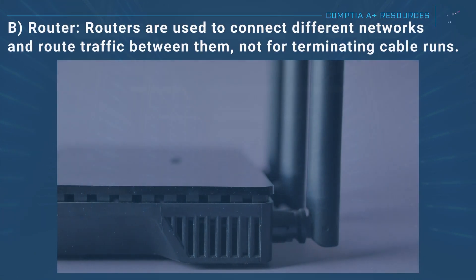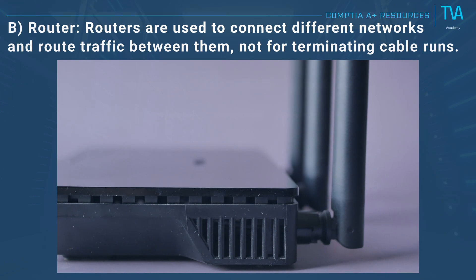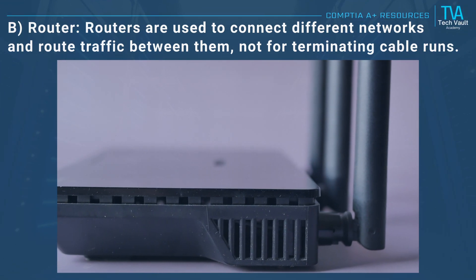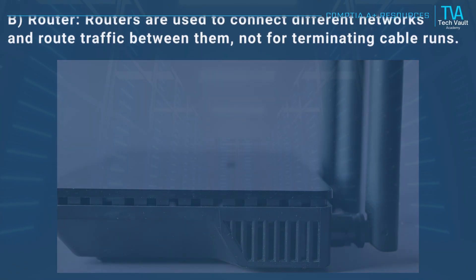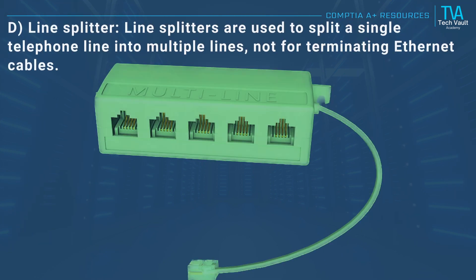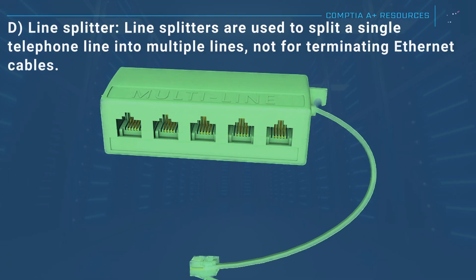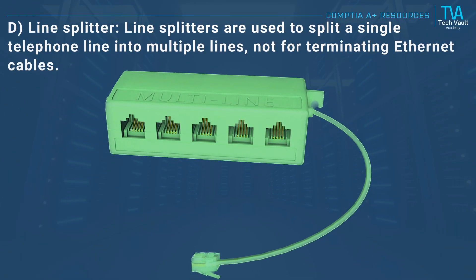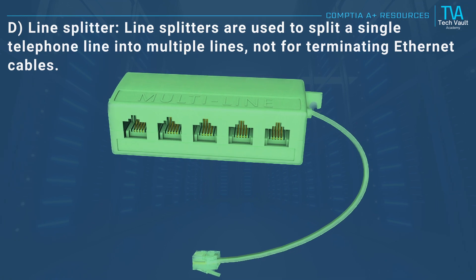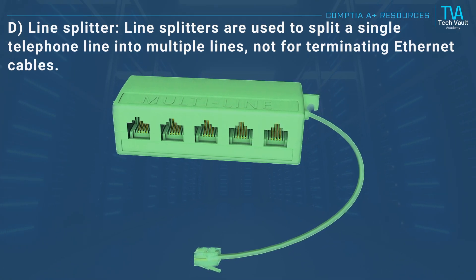B, router: routers are used to connect different networks and route traffic between them, not for terminating cable runs. D, line splitter: line splitters are used to split a single telephone line into multiple lines, not for terminating Ethernet cables.